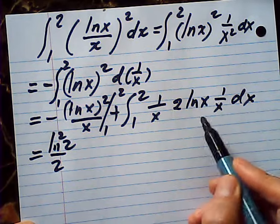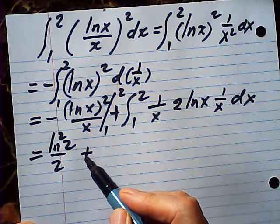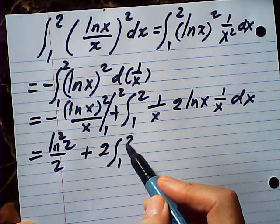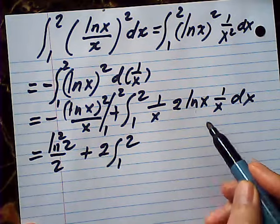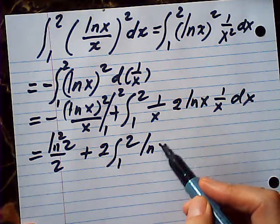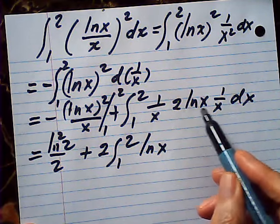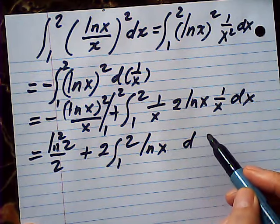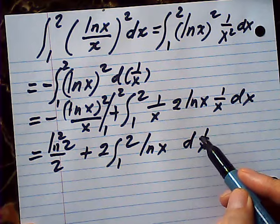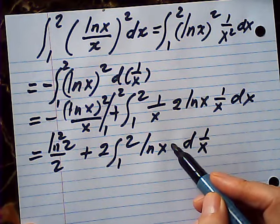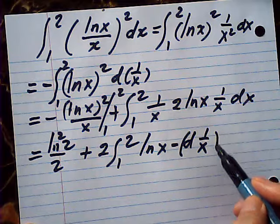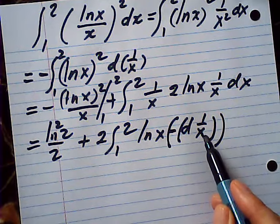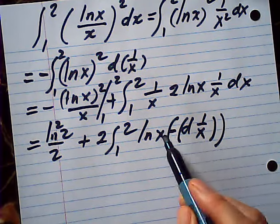this will be by parts again. This is plus 2 from 1 to 2, log x, and 1 over x squared becomes d of 1 over x. Isn't it? It's negative. Okay, this is negative. This will be 1 over x squared positive.